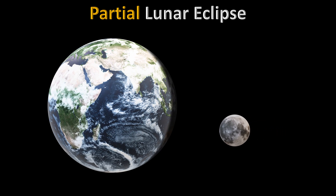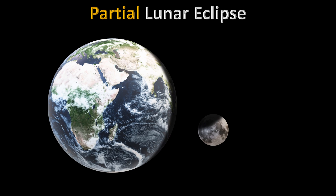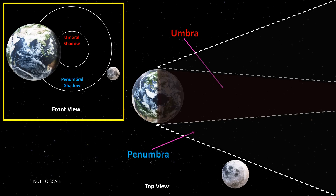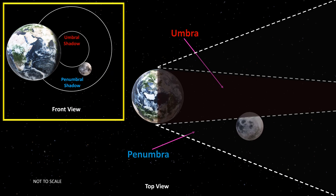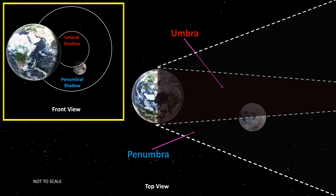The second type of lunar eclipse is a partial lunar eclipse, which occurs when the Sun, the Earth and the Moon don't perfectly align, so only part of the Moon passes into Earth's umbral shadow.